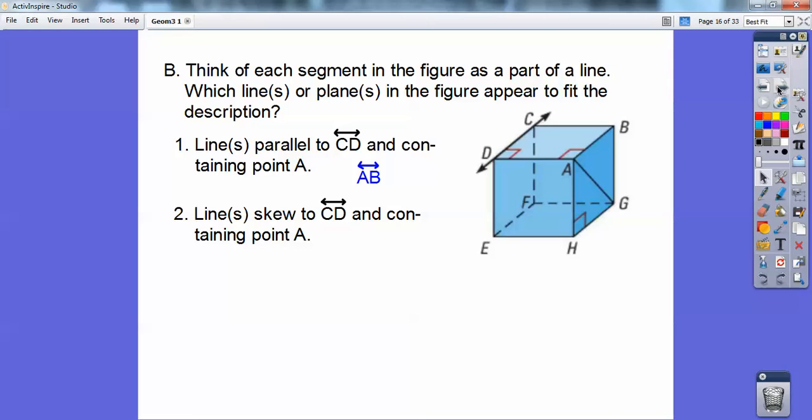Line or lines that are skew to CD and contain point A. Here's one that's skewed to it. AG is skewed to it. It's in a different plane but it would never intersect it. Same with HA. HA is also skewed to it. That's what our book suggests. And then one of my students said, well, what about if there was a line going through EA? Yeah, EA would also be a skew line if there was a line right there, but they didn't include that in our textbook.